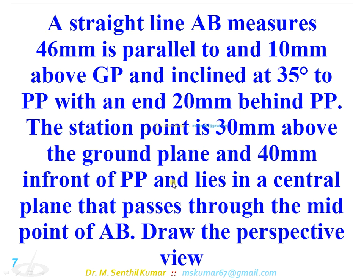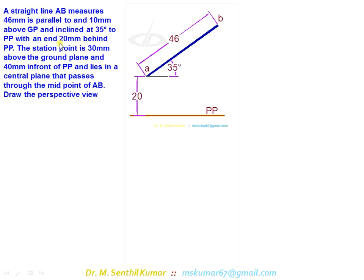Okay, so this is the problem with the given data. You see the line is parallel to GP and inclined to PP, so in top view you could see the true length 46 and true angle 35 degrees.